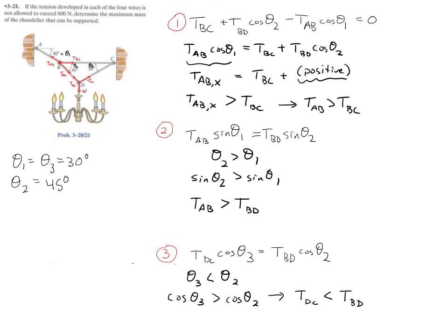So what we find here is that TAB is bigger than both BC and BD, and BD is bigger than DC, so TAB must be bigger than all of them. So the conclusion out of this argument is that TAB is the largest, so we want to put in 600 newtons for that. If that rope doesn't break, the others are not going to break, and so we're going to put in TAB equals 600 newtons.